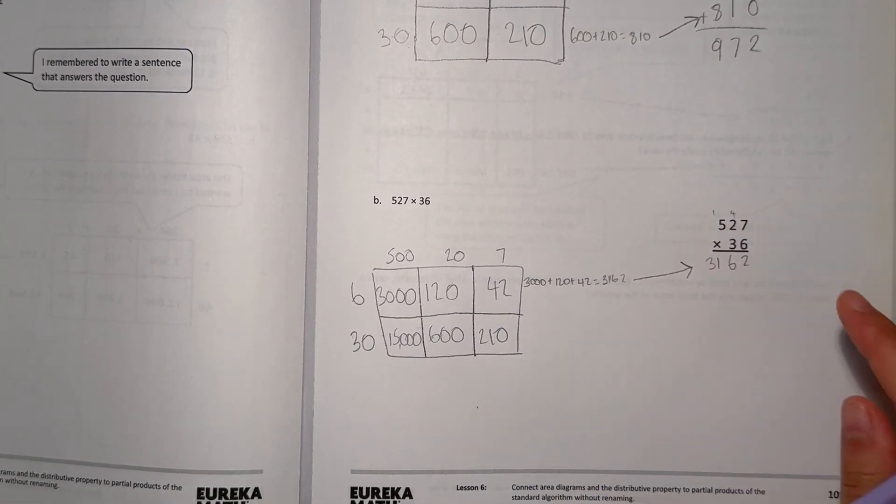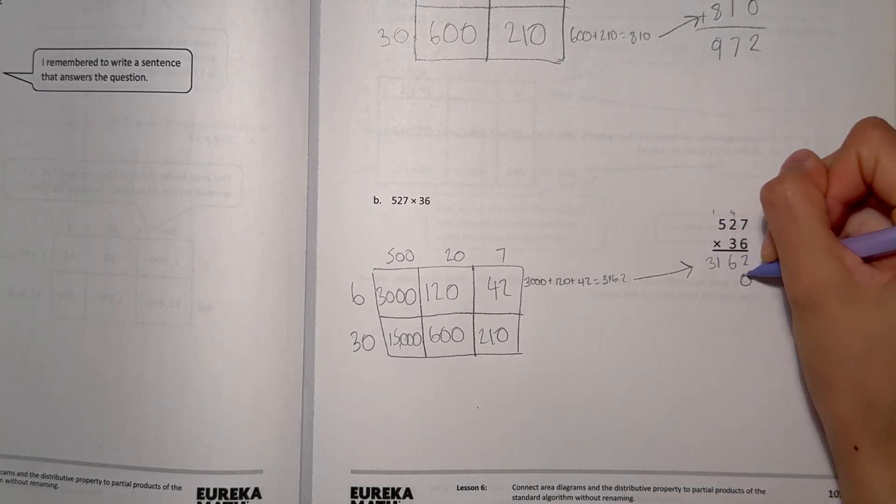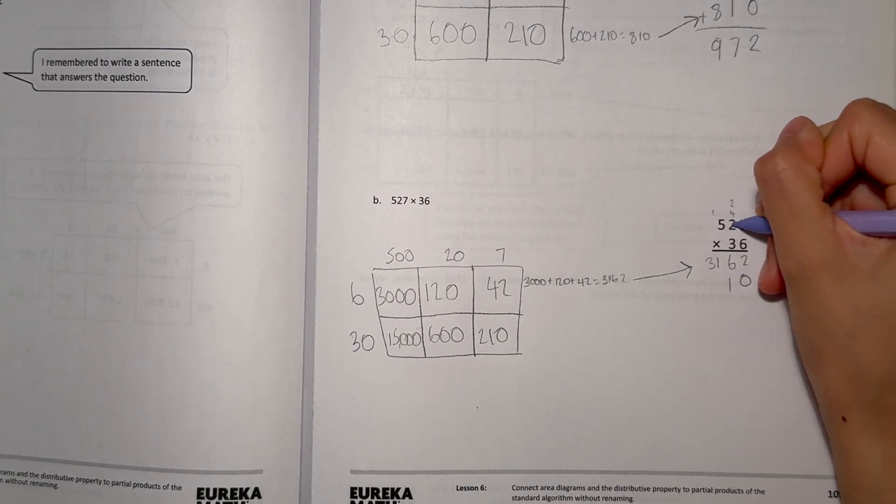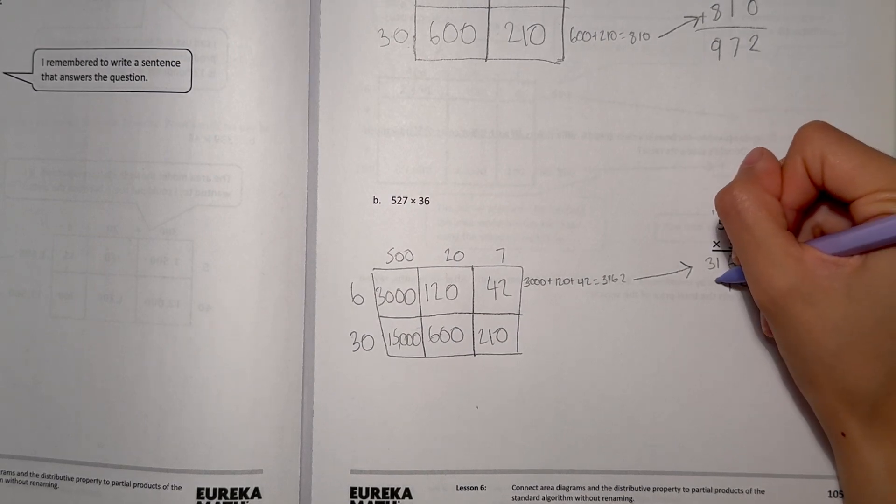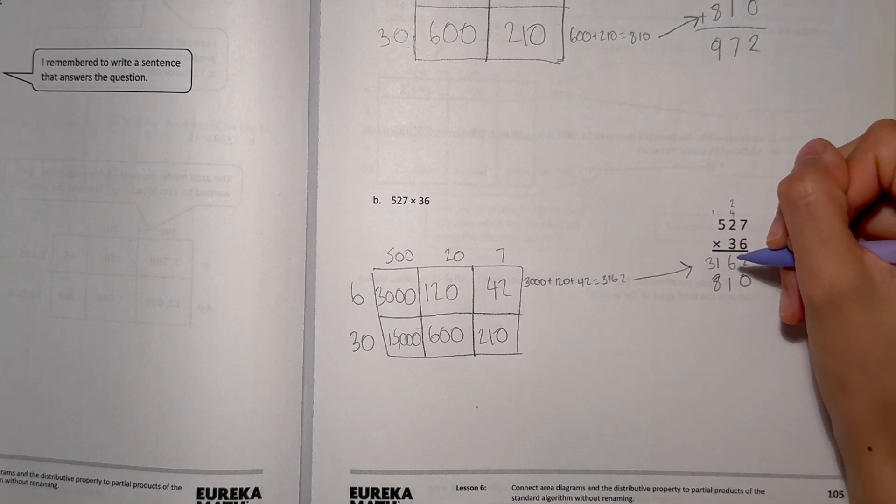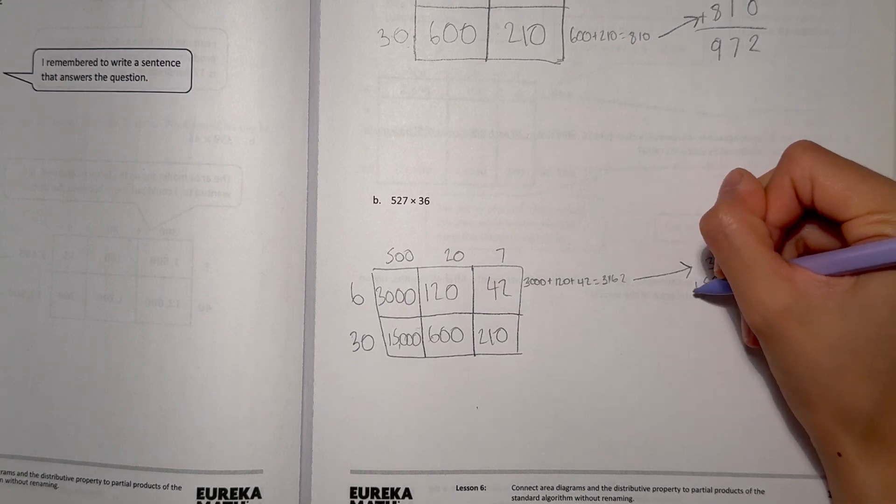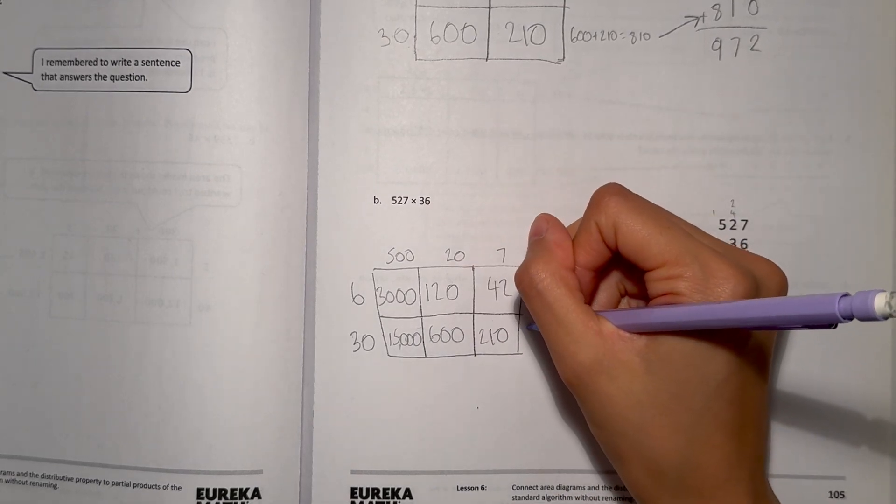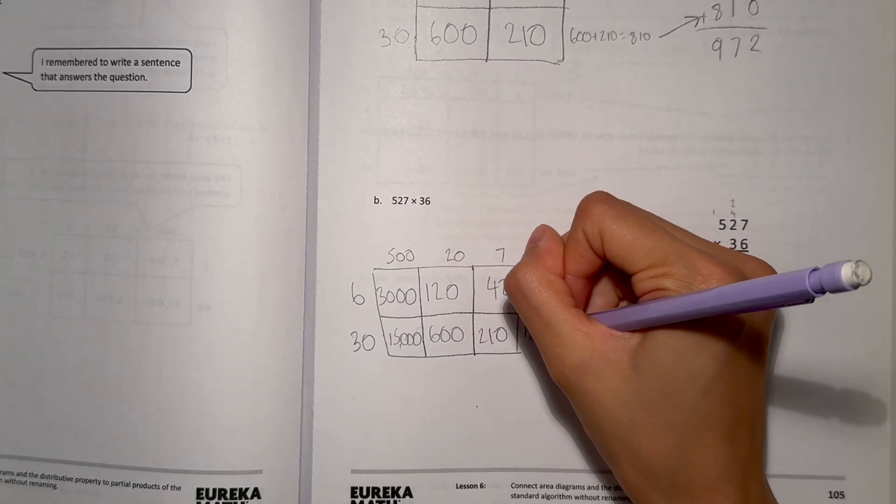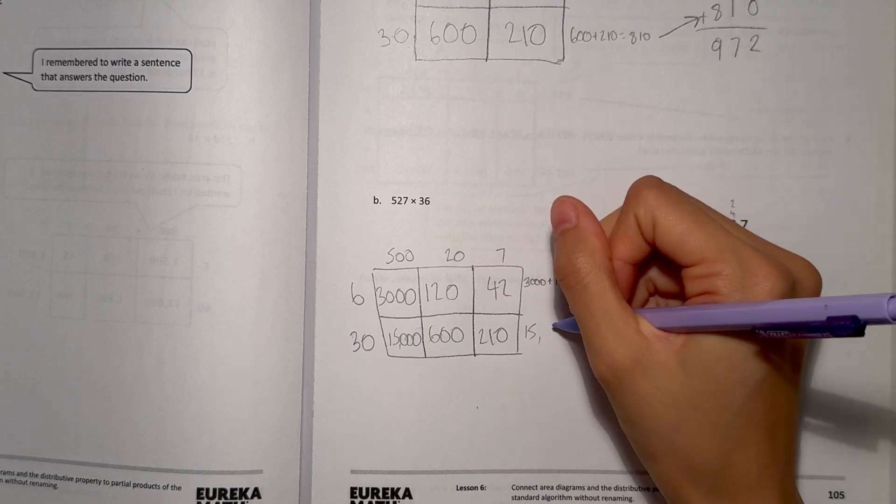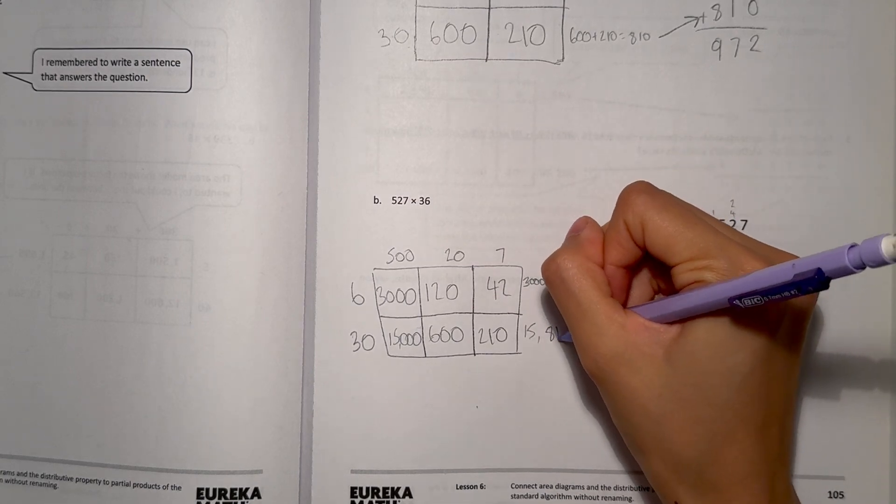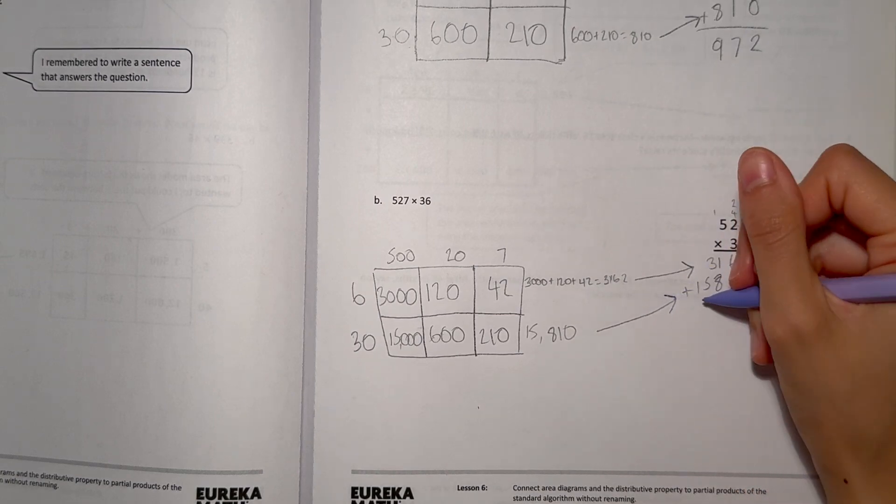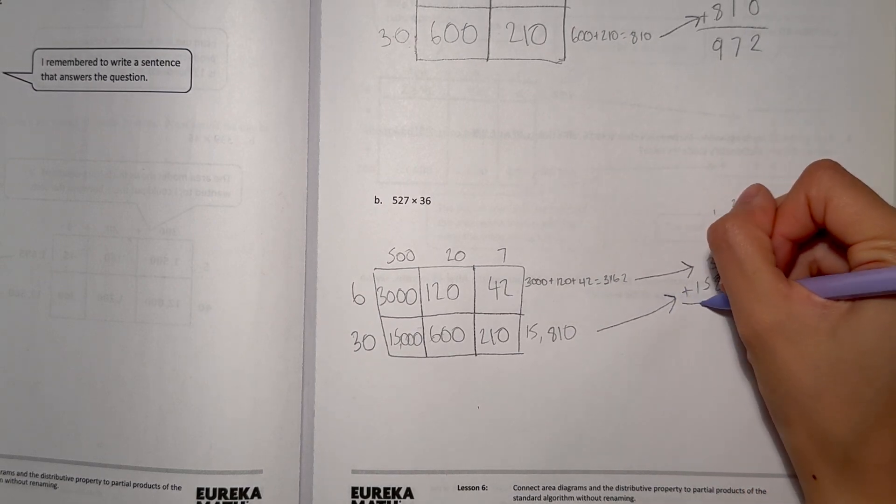Now let's continue on multiplying. Add a 0 at the end. 7 times 3 is 21. 2 times 3 is 6. Plus 2 is 8. And 5 times 3 is 15. 15,000 plus 600 is 15,600. But then plus 210, that's 15,810. So this number is equal to the number over here. So that's the bottom part of our area model.